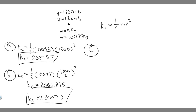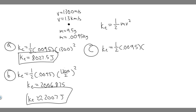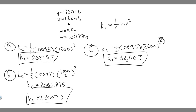For C, the speed is doubled, so instead of halving it, we multiply by 2. Kinetic energy is one-half times 0.0095 times 2 times 1,300, which is 2,600, squared. So 0.5 times 0.0095 times 2,600 squared. The kinetic energy equals 32,110 joules. So that's the kinetic energy if the speed is doubled, 2,007 joules if halved, and 8,027.5 joules for the original speed.